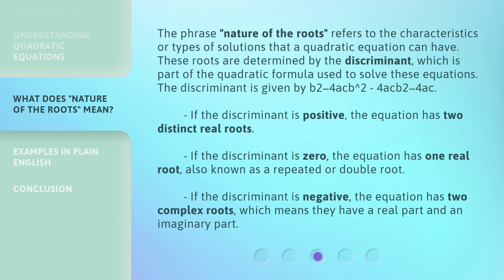If the discriminant is negative, the equation has two complex roots, which means they have a real part and an imaginary part.